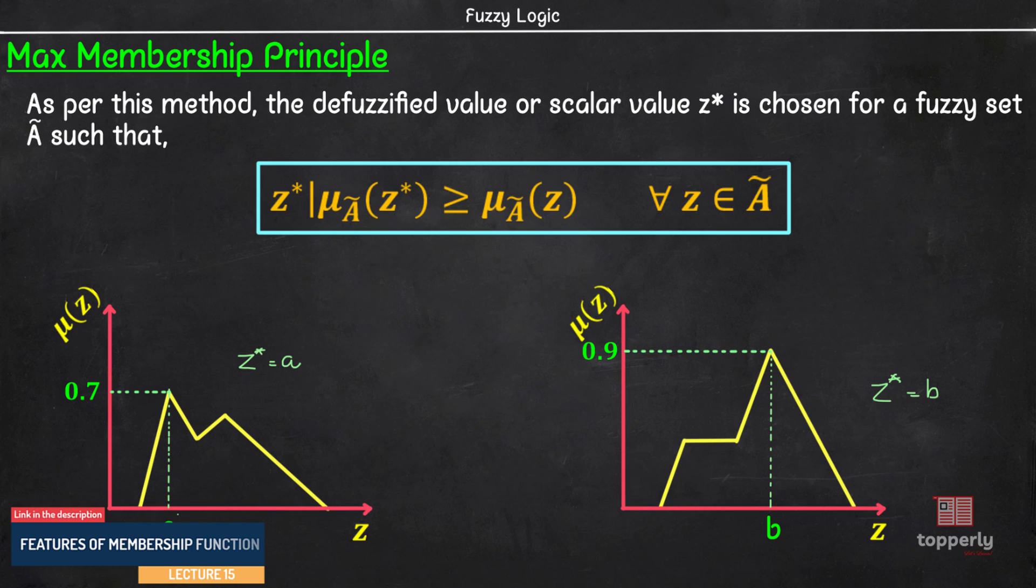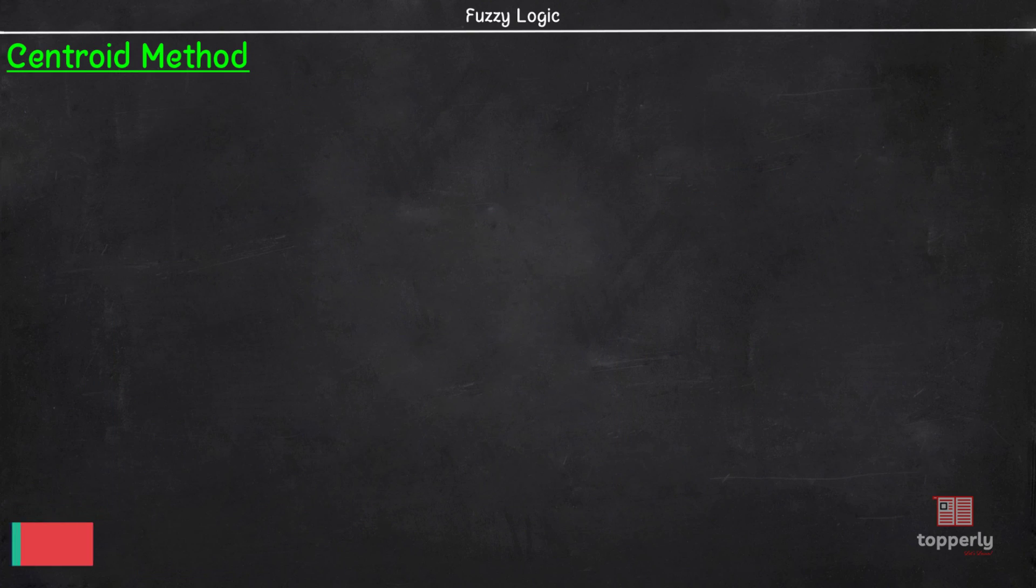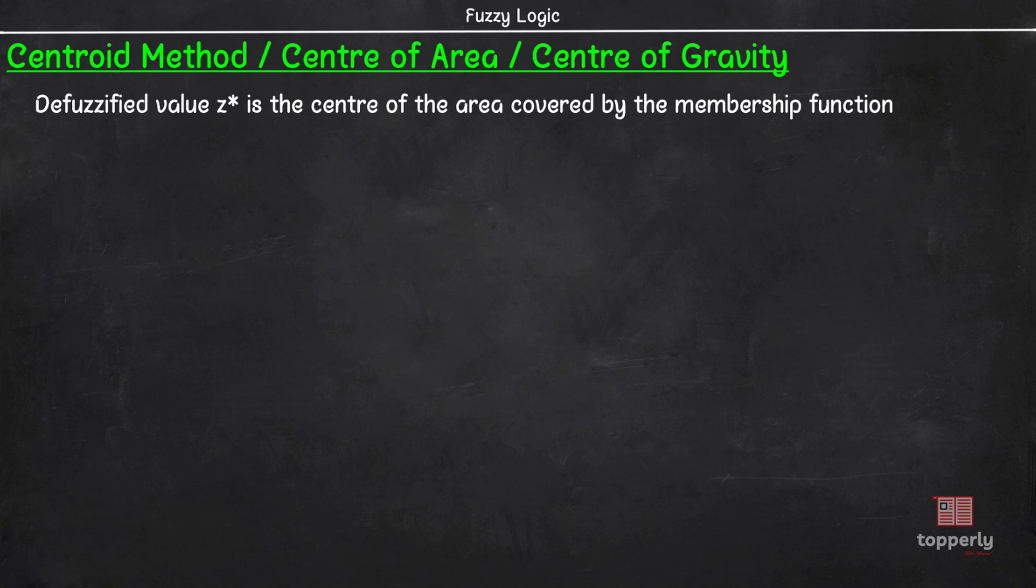Next method for defuzzification is the centroid method. This method is also called as center of area or center of gravity methods. Here, the defuzzified value z* is the center of the area covered by the membership function. That is, z* is given by the algebraic expression z* equal to integral μ_A(z) · z dz divided by integral μ_A(z) dz.